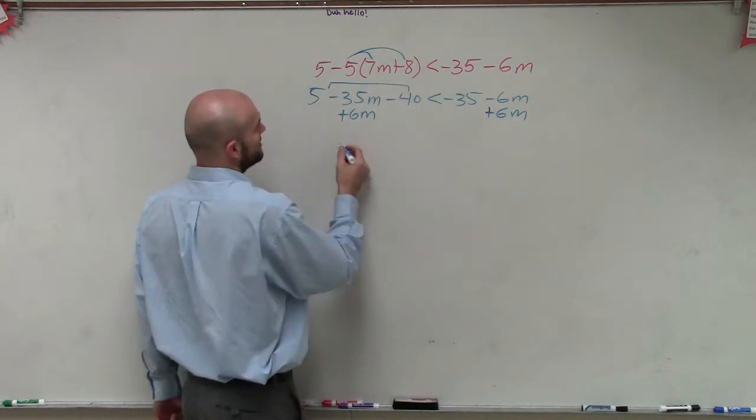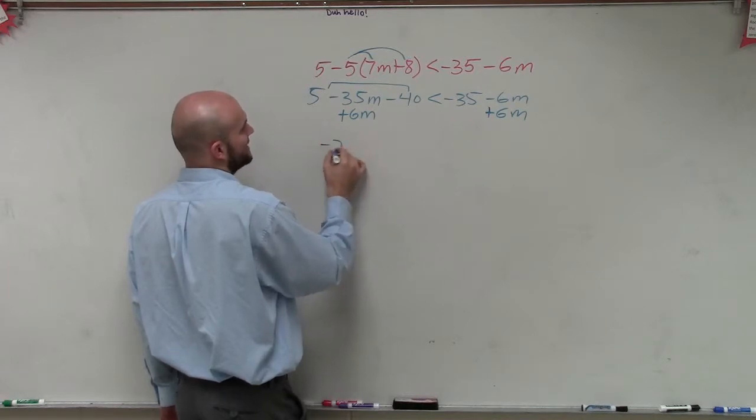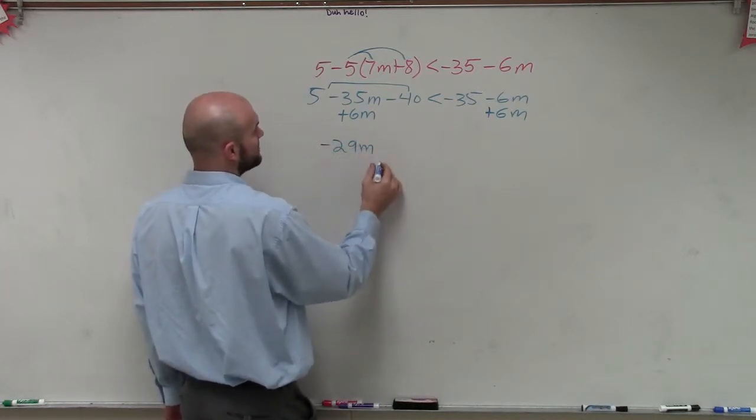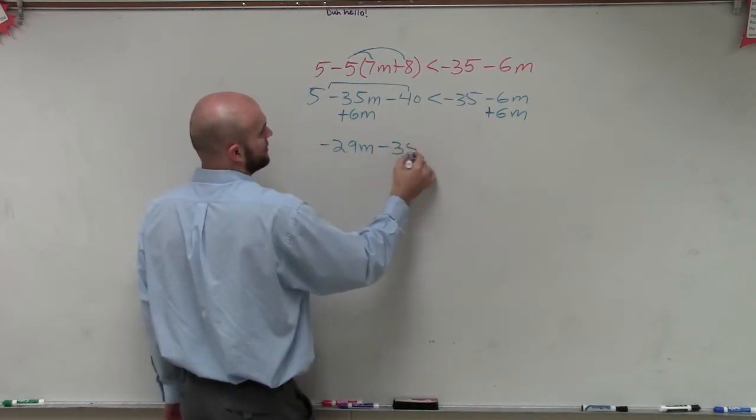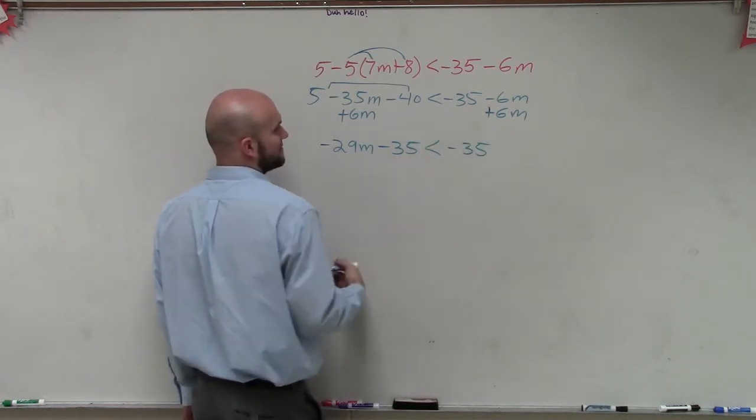So then I can add the 6m. And then I can combine these two terms. So 5 minus 40 is now going to be negative 35. So therefore, I have negative 29m minus 35 is less than negative 35.